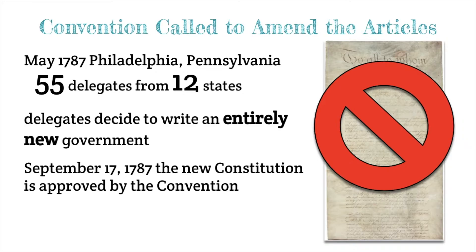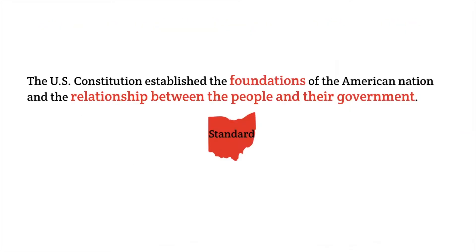In May of 1787 in Philadelphia, the Constitutional Convention was called together, and 55 delegates from 12 states arrived. Over the course of the first few days, they decided that they did need to scrap the Articles of Confederation and create an entirely new form of government. By September of 1787, a new constitution was written, which would then have to go before the states for ratification and approval. We're simply going to look ahead to what are the characteristics of this new government.